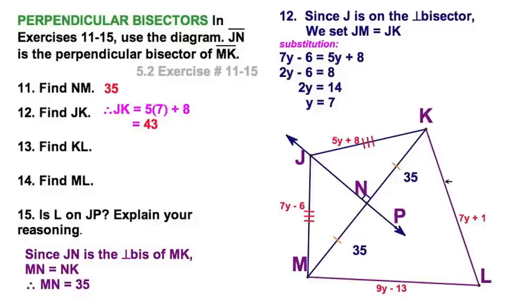But now we're asked for KL. Well, straightforward there. 7 times 7 plus 1 is 50. And how about ML? 9 times 7 minus 13. And what do you know? That's also 50.